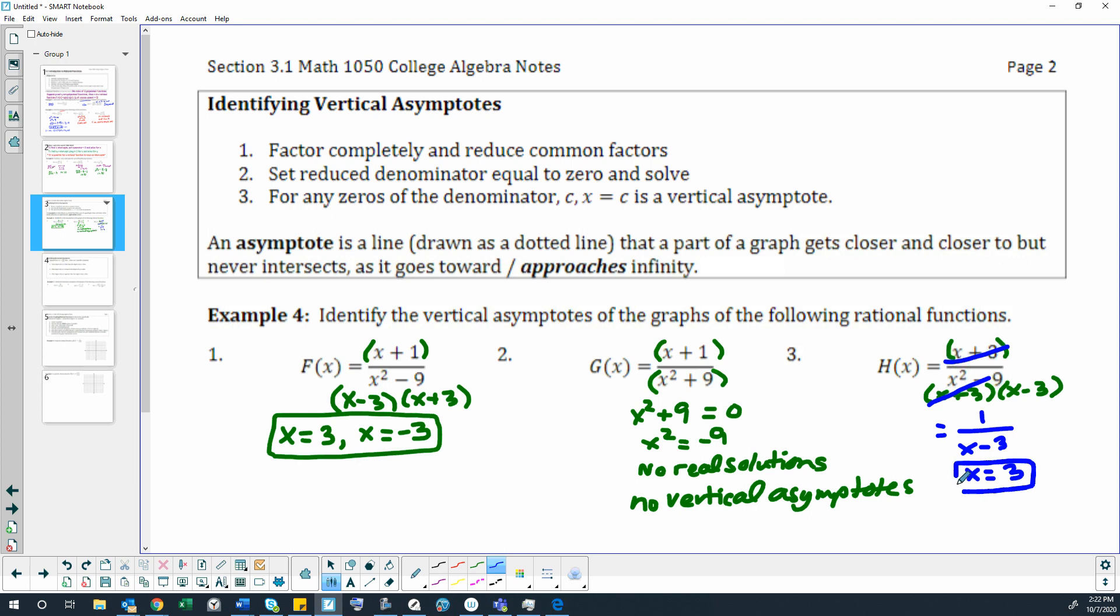That's weird. We still said in example 2 that the domain did not exist at 3 or negative 3. So how come we have a vertical asymptote at 3 but we don't have one at negative 3 if the domain doesn't exist at negative 3? We're going to learn more about that in another section, but we have what we call a hole at the point where x equals negative 3.